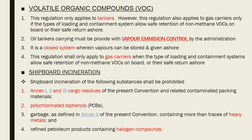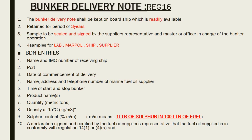Shipboard incineration: the substances prohibited from being burned in the incinerator are — Annexure 1, 2, and 3 cargo residues; polychlorinated biphenyls (PCBs), for example transistors; garbage as defined in Annexure 5 containing heavy metals; and refined petroleum products containing halogen compounds.